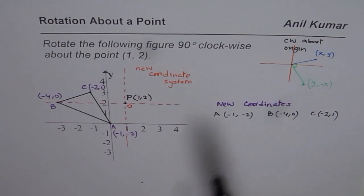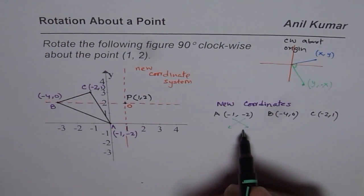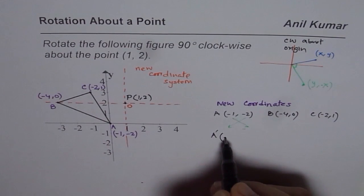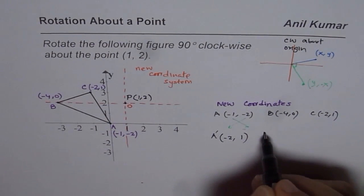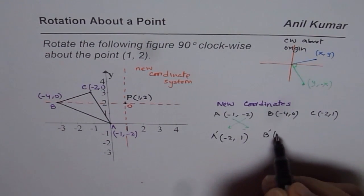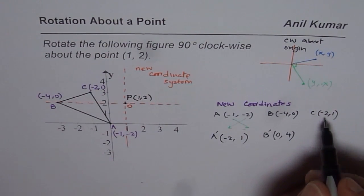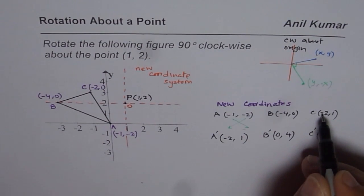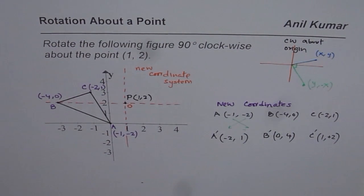Now we will apply the rotation concept. We flip the coordinates and make the Y value negative to get the image. So A' will be: flipping (-1, -2) gives (-2, 1). For B': flipping (-4, 0) gives (0, 4) — negative of -4 is positive 4. For C': flipping (-2, 1) gives (1, 2) — negative of -2 becomes plus 2. So those are the new coordinates in the new system: A' = (-2, 1), B' = (0, 4), C' = (1, 2).